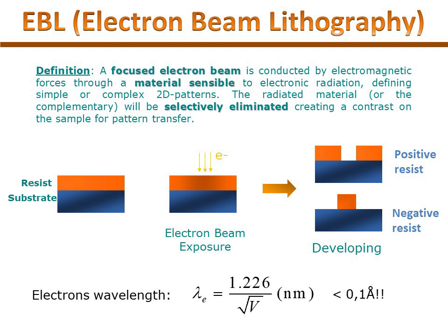At these levels, the main elements responsible for resolution limits are the resist and the apparatus, not the wavelength itself. A wavelength of 0.1 angstroms will not allow fabricating a nanosystem with 0.1 angstrom resolution. Using electrons, we perform the so-called e-beam lithography, which needs a resist sensitive to electrons. The most popular one is PMMA, polymethyl methacrylate, which is composed of large organic molecules.